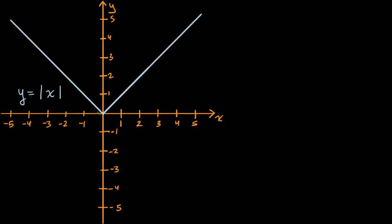This right over here is the graph of y is equal to absolute value of x, which you might be familiar with. If you take x is equal to negative two, the absolute value of that is going to be two. Negative one, absolute value is one. Zero, absolute value is zero. One, absolute value is one. So on and so forth.